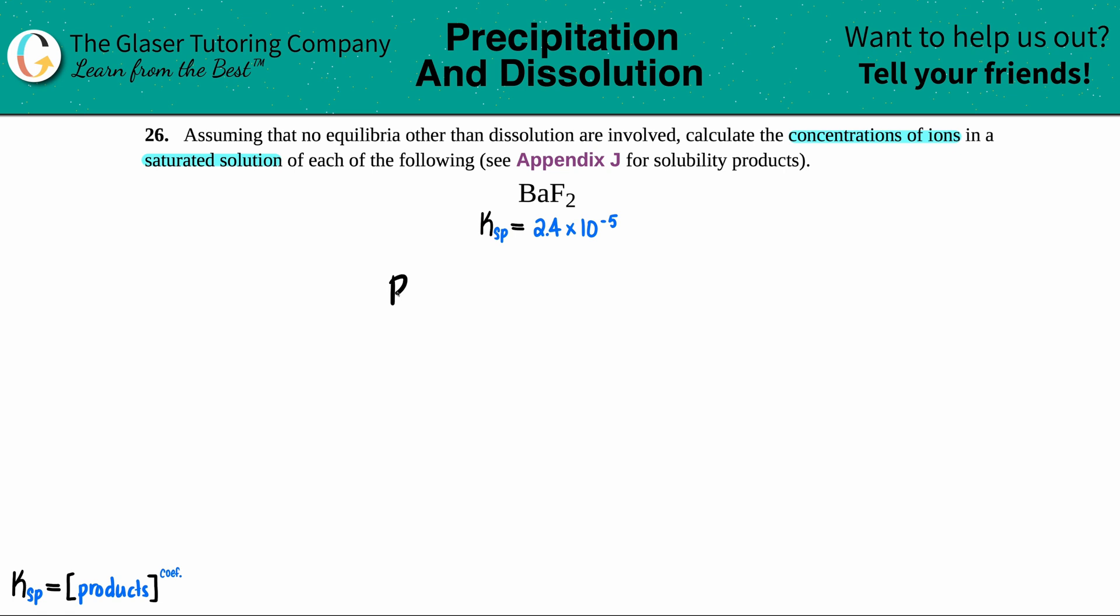With Ksp values, you're always going to start with your solid. So that's the BaF2. And then it comes to equilibrium because we're discussing K values. And it comes to the two ions. So the break has to be between the two elements, barium and the fluorine.